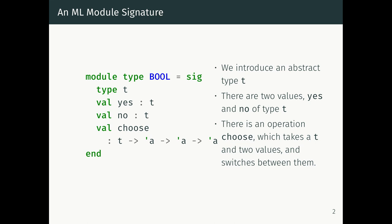If you have a module implementing the boolean interface, you have to have an abstract type t, and two primitive values of type t: a value yes and a value no, corresponding to true and false. We also need a choose function, which takes an abstract boolean and takes two values of type 'a and returns a new value of type 'a. It switches between those two values based on the value of the boolean argument.